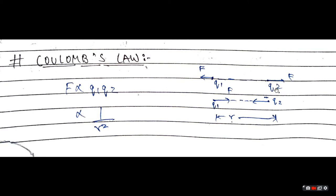Q1 ने F force लगाया Q2 पर और उसी की opposite में Q2 ने F force लगाया Q1 के ऊपर। यह force repulsive है क्योंकि Q1 और Q2 दोनों ही positive हैं या दोनों ही negative हैं। नीचे देख सकते हैं कि Q1 और minus Q2 charges हैं जो एक दूसरे पर attractive force apply कर रहे हैं, क्योंकि एक positive है और एक negative है।